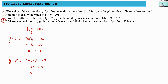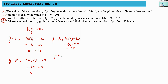Next, we take y equals to 3. So we get 10 into 3 minus 20, which is 30 minus 20, and the answer is 10. Then for y equals to 4 we are taking the next case.